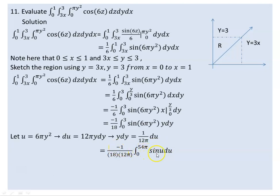The integral of sine u is negative cosine u. Evaluating: cosine of 0 equals 1, and the boundary terms are computed. The result after evaluating the cosine terms comes out to 0 after substitution and evaluation.